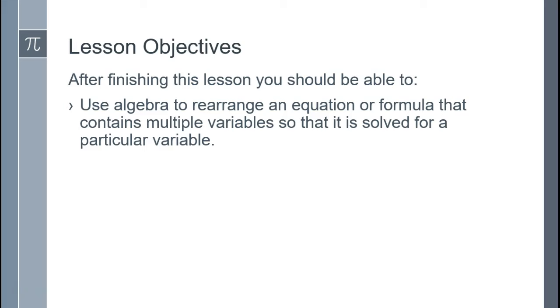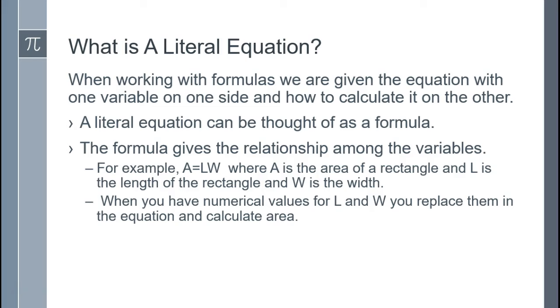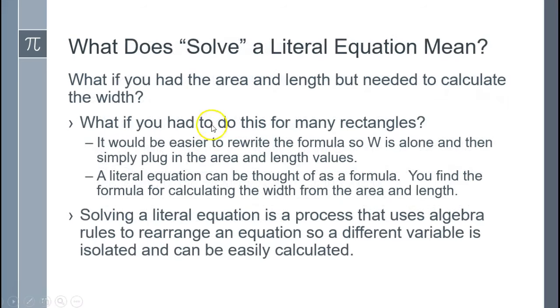Usually it would be the variable we would need to find given the other information. When we work with formulas, usually the equation has one variable on one side and how to calculate it on the other. The example I use here is area equals length times width. This works great if you have a length and width and need to calculate the area. But sometimes, instead, you have area and length but need to calculate the width.